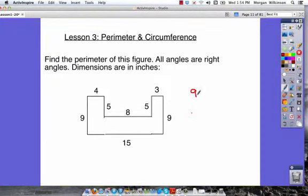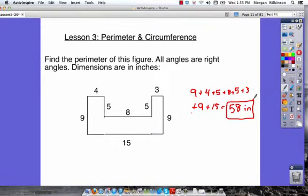So we've got 9 plus 4 plus 5 plus 8 plus 5 plus 3 plus 9 plus 15. When we add those together we're gonna find out what our perimeter is. So go ahead and add those up. We get a total of 58 inches. Make sure you have your unit on there as well. You can write out inches or you can just say IN. 58 inches would be our answer.